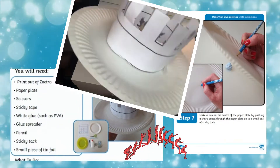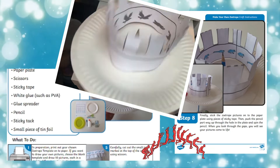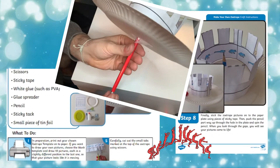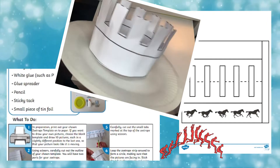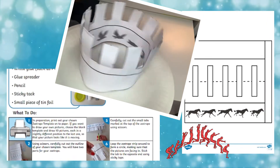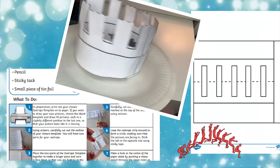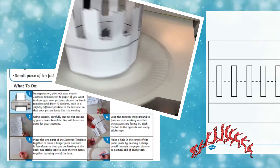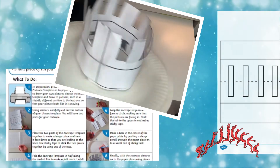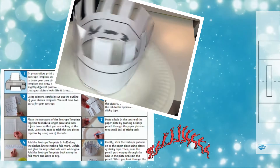A list of resources is given and children will follow the step-by-step instructions to make their own zoetropes using the illustrations of a running horse, leaping frog, or flying bird. Children can even make their own unique animations with the blank template to draw their own pictures.